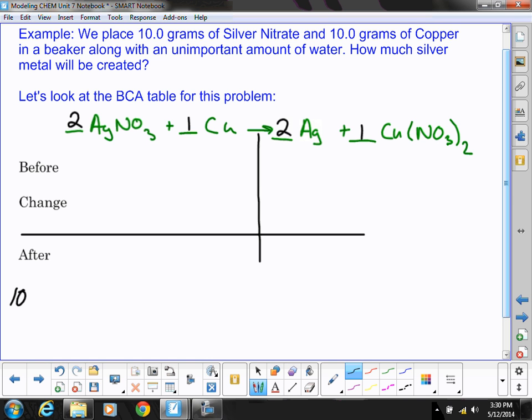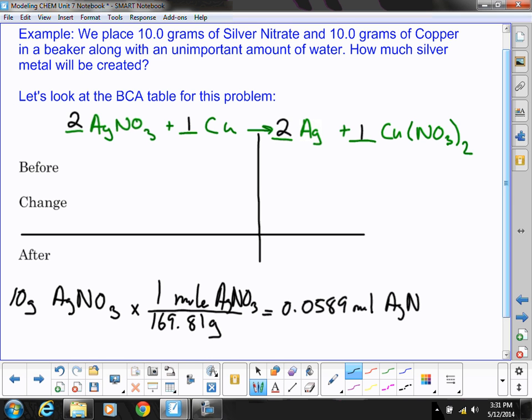And so we do that the same way that we've been practicing. We have 10 grams of silver nitrate. We're going to want to divide by the molar mass of silver nitrate, which if you use your periodic table, we take one atom of silver, which is 107.87 grams per mole, add that to one nitrogen, which is 14.01 grams per mole, and three oxygens at 16 apiece. We end up with a molar mass of 169.81 grams. So 10.0 grams times one mole silver nitrate divided by 169.81 grams into three sig figs. We get 0.0589 moles AgNO3.